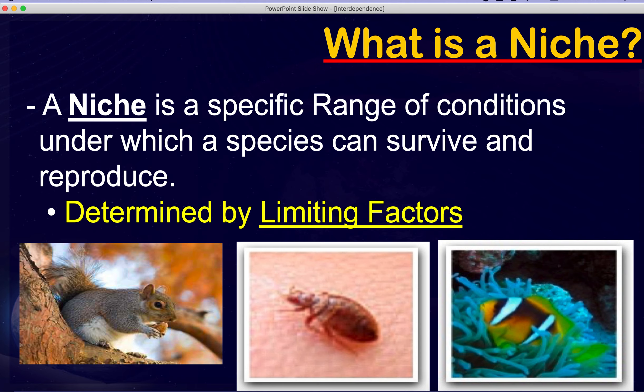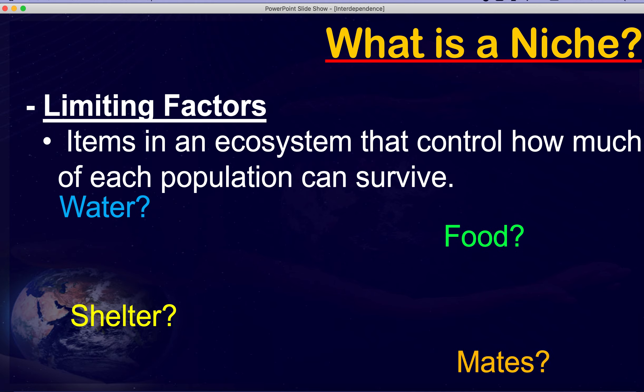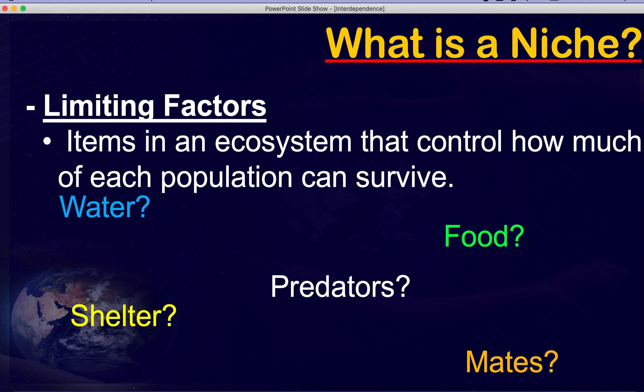This is always determined by what we call limiting factors — these control how much each population can survive. We're talking about food, shelter, water, predators, mates. For humans, we don't have many predators other than maybe ourselves, but food and water are things we need to survive. Every species is in some way controlled by these different factors.